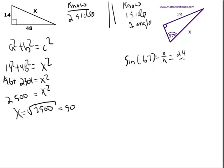And that's the sine. So the sine of 67 equals the opposite over the hypotenuse, or 24 over x.